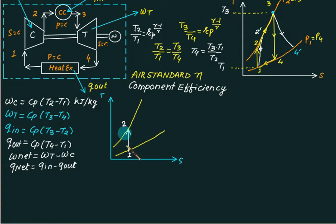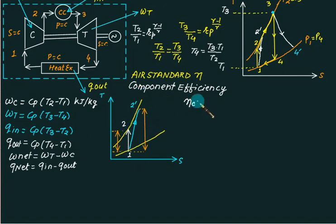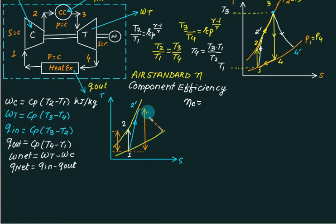Process one is the isentropic process and process two represents the actual process. To define efficiency for a compressor, remember efficiency is always less than one, meaning the numerator must be lower compared to the denominator. The isentropic enthalpy drop delta-h_s is smaller as compared to the actual enthalpy drop delta-h_actual.